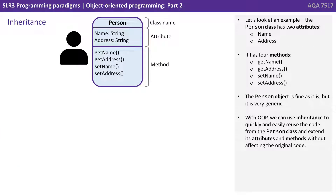Let's look at an example. The person class has two attributes: name and address. It has four methods: get name, get address, set name, and set address. The person object is fine as it is, but it's very generic. With OOP, we can use inheritance to quickly and easily reuse the code from the person class and extend its attributes and methods without affecting the original code.